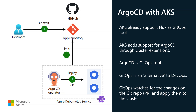You will learn how to use ArgoCD with an AKS cluster. AKS already has support for a GitOps tool called Flux since a few years ago. Within the Kubernetes ecosystem, the two most known and most used GitOps tools are Flux and ArgoCD. To satisfy most of its customers, AKS is now offering support for ArgoCD through cluster extension. As of today, that support is in private preview but should be generally available in a few months.